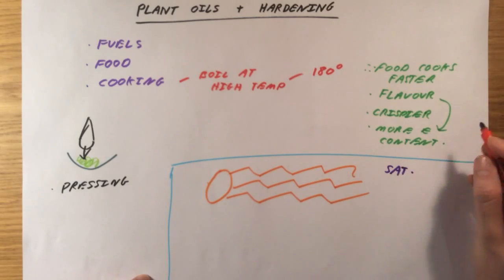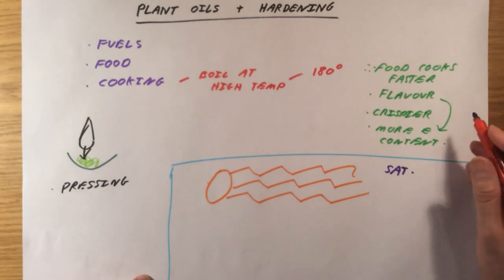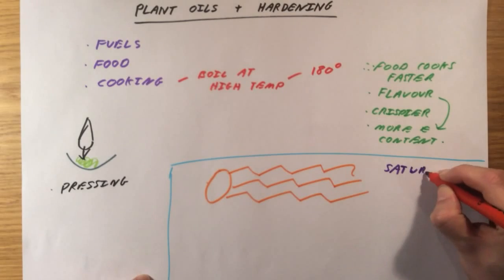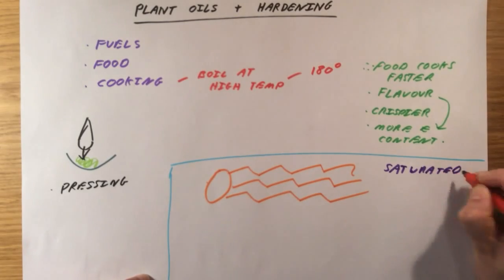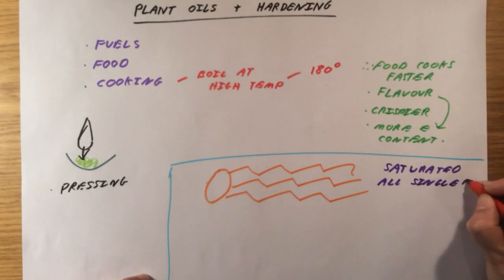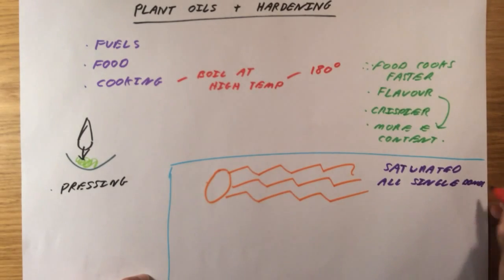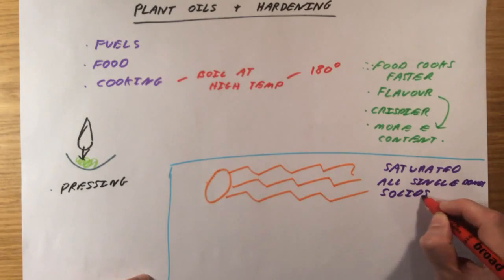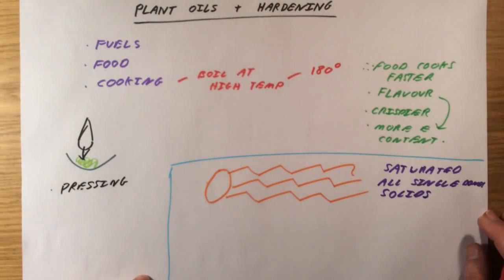So saturated fats, things like butter, things like lard, generally animal fats are saturated. They've got all single bonds, and they're generally solids. And we tend to think of them as being less healthy than unsaturated fats.